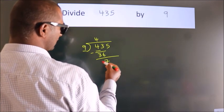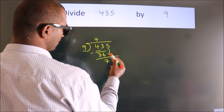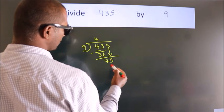After this, bring down the beside number. So 5 down. So 75.